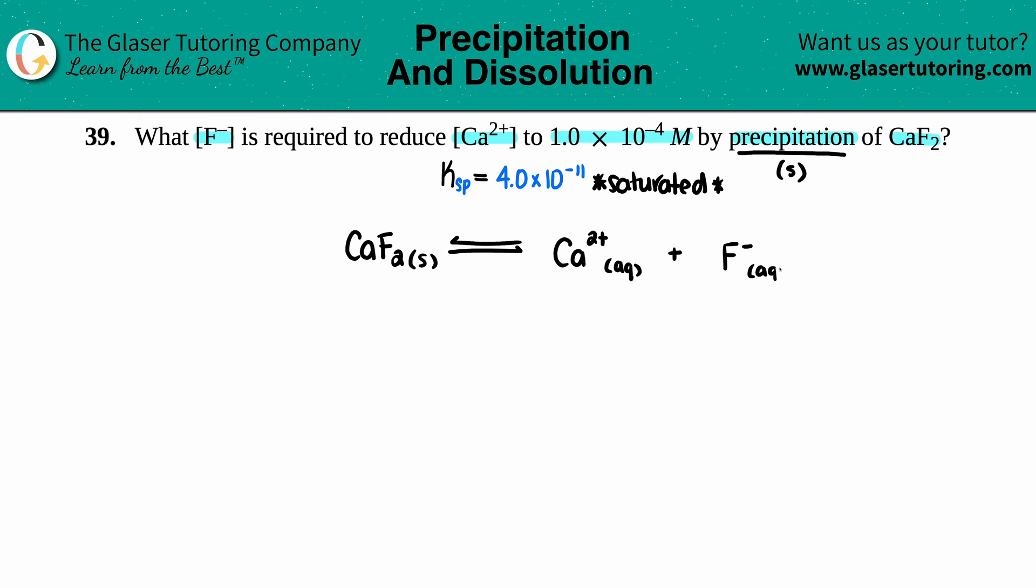Let's balance the equation here. I know that I have two fluorines, so I have to put a 2 in front of here, and now we are balanced.